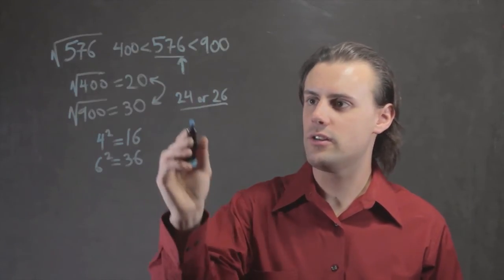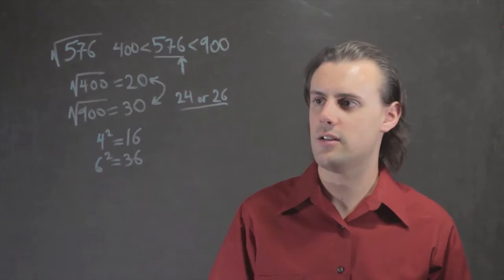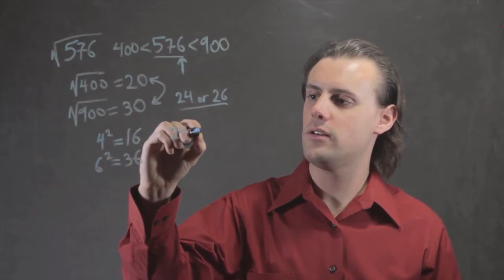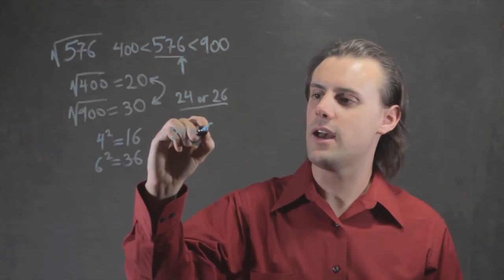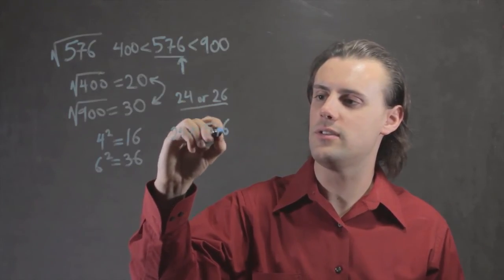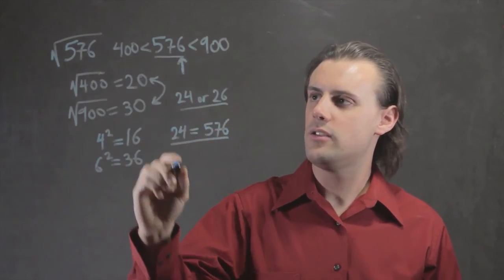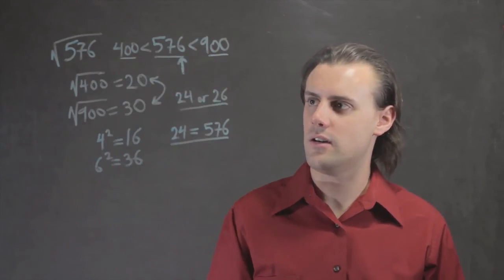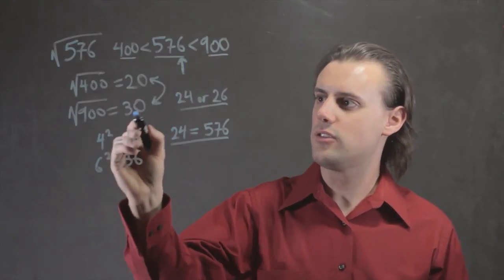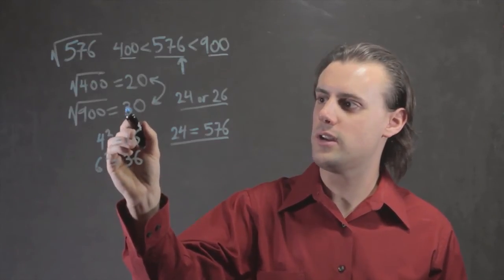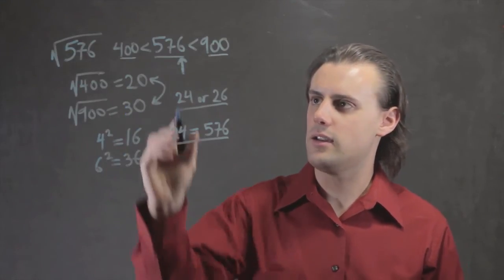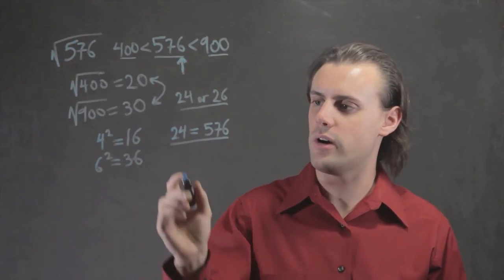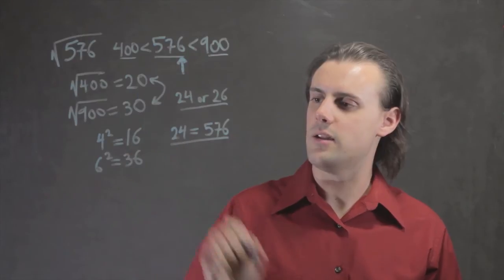If we wanted to, we could either take the average of these or actually check directly. If we square 24, it turns out we get exactly 576. So we know from these easy limits — easily calculable between 20 and 30 — and we used the units place as guidance for exactly what that number should be.